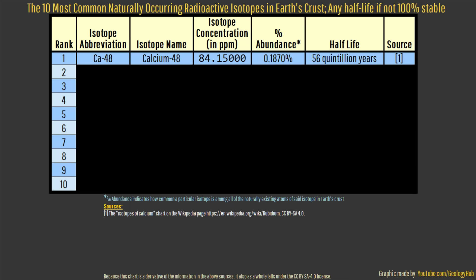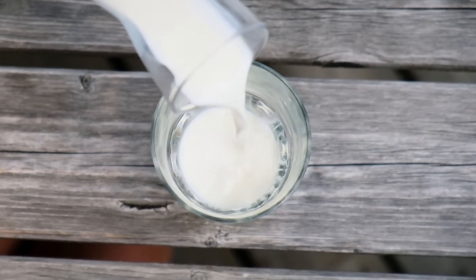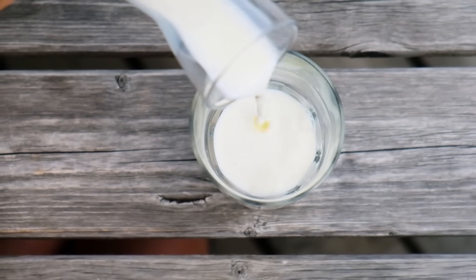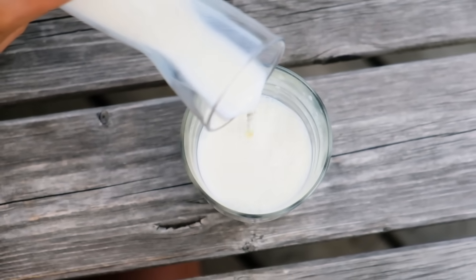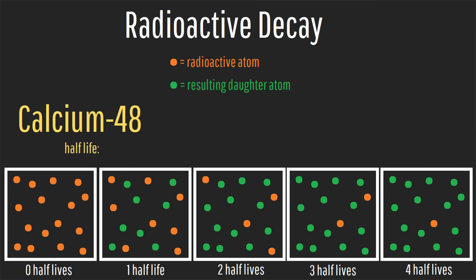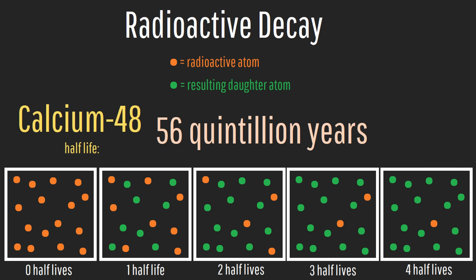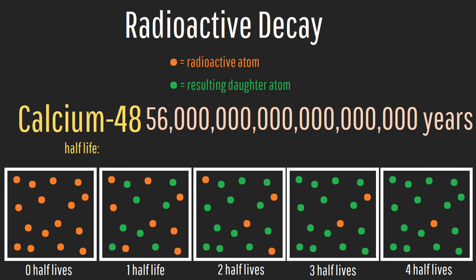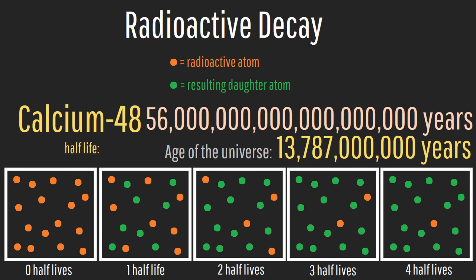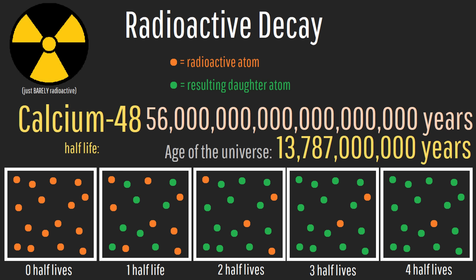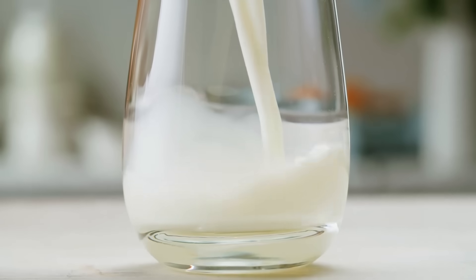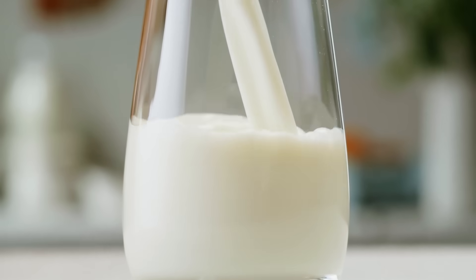The most common technically radioactive isotope, comprising 84.15 parts per million of the entire earth's crust, is calcium-48. But wait, before you nervously spit out any milk you might be currently drinking, since that is a good source of calcium, know this: the half-life of calcium-48 is 56 quintillion years, which written out is 56 followed by 18 zeros. That happens to be more than 4 billion times longer than the age of the universe. In other words, calcium-48 has such an absurdly low level of radioactivity that it isn't problematic or even a health hazard, so drinking milk has zero radiation dangers from this isotope.